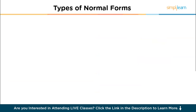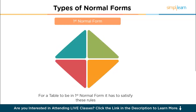Let's now discuss the types of DBMS normal forms. Normalization rules are categorized into different normal forms. The first one is First Normal Form (1NF). For a table to be in 1NF, it must satisfy four rules. The first rule is single-valued atomic attributes: each column should contain only one value per row, meaning there should be no repeating groups or arrays within a single column.